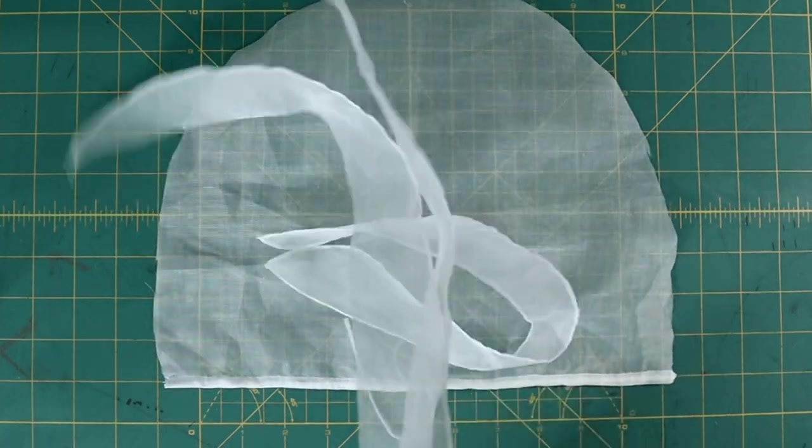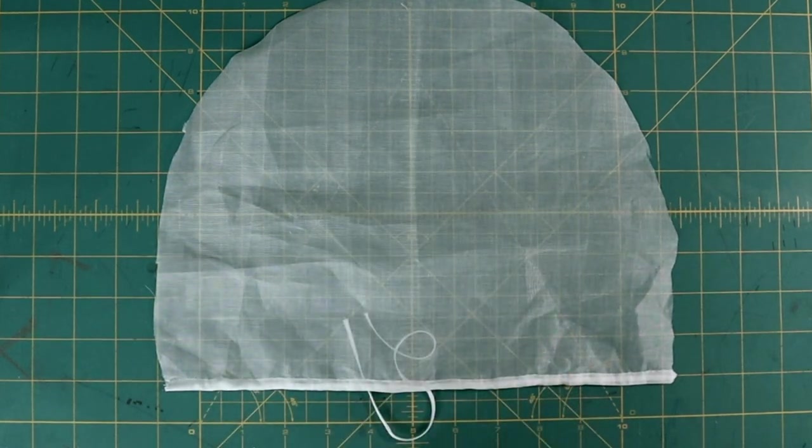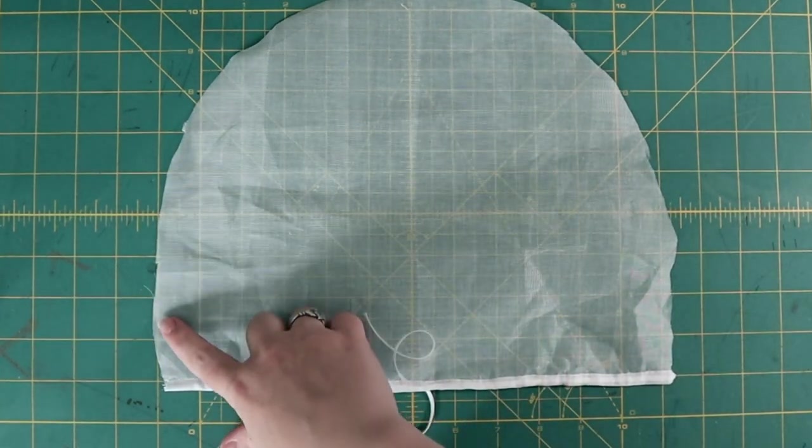With the three main pieces mostly finished, it's time to tackle gathering the cull to the band. The first thing I like to do is preemptively hem up a small area on both sides of the cull.